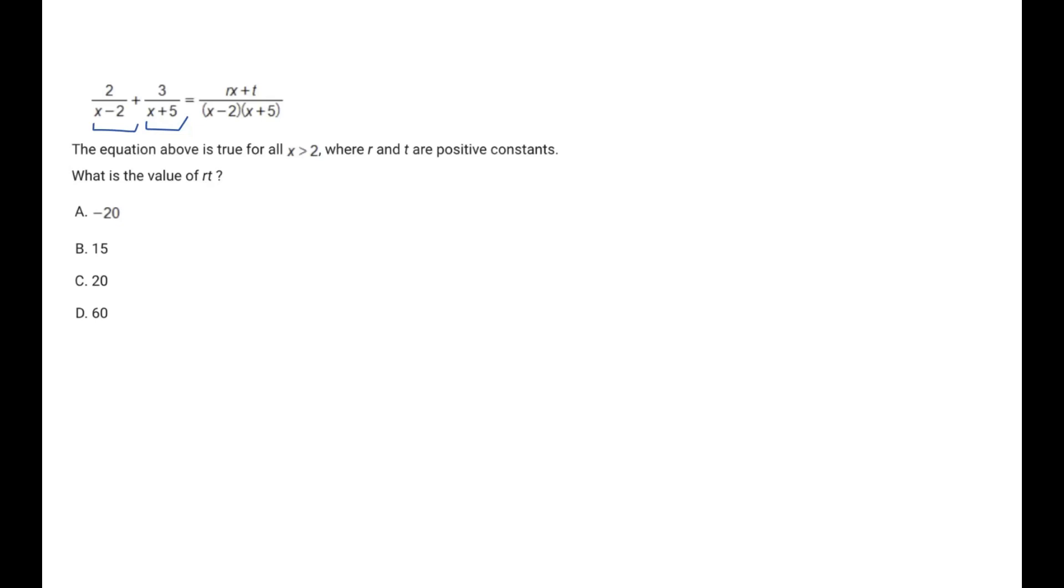I'll show you how it works. For this one, 2 over (x-2), if we multiply this by (x+5) over (x+5), we get 2 times (x+5) over (x-2) times (x+5). Whatever we do to the denominator, we have to do to the numerator, because (x+5) over (x+5) is 1. So in reality, we're not doing anything to it, but we're just giving it the same denominator, so we can cancel it all out at the end.